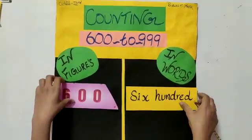First number we have is 600. 600 in words. Our next number is 605. 605 in words.